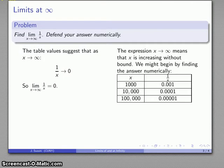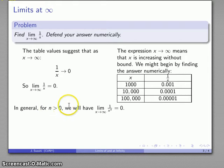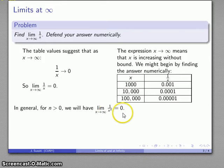So the limit as x goes to infinity of 1/x is zero. This is actually a very general rule: if n > 0, then as x goes to infinity, the expression 1/xⁿ tends to zero. Because we are taking the limit as x goes to infinity, we refer to this as a limit at infinity. A similar argument holds if x goes to negative infinity.